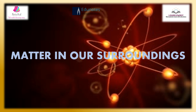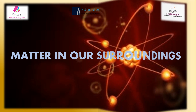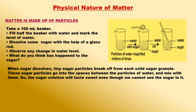In this chapter, we will study the classification of matter on the basis of its physical properties. Physical nature of matter: matter is made of particles. Everything around us is made of tiny pieces or particles. The number of particles in everything is, however, very, very large.